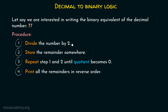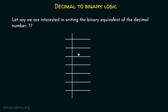Let's see how to do this procedure — it's like prime factorization, but every time we divide the number by 2. So let's place 77 here and divide by 2. Since 77 is an odd number, we will get 38 as the quotient and 1 as the remainder, because 38 times 2 is 76, and 76 plus 1 is 77.